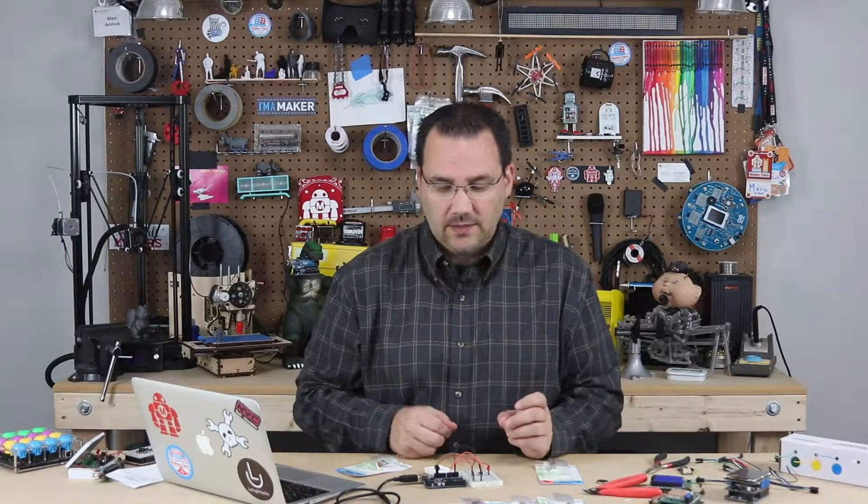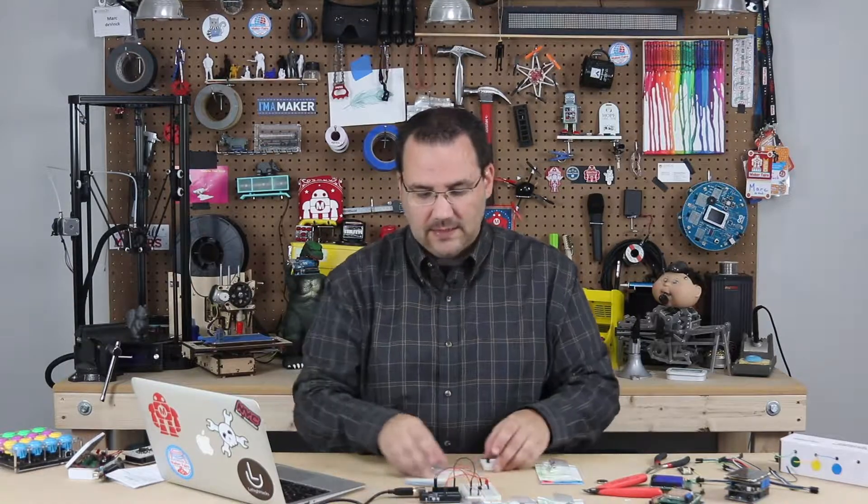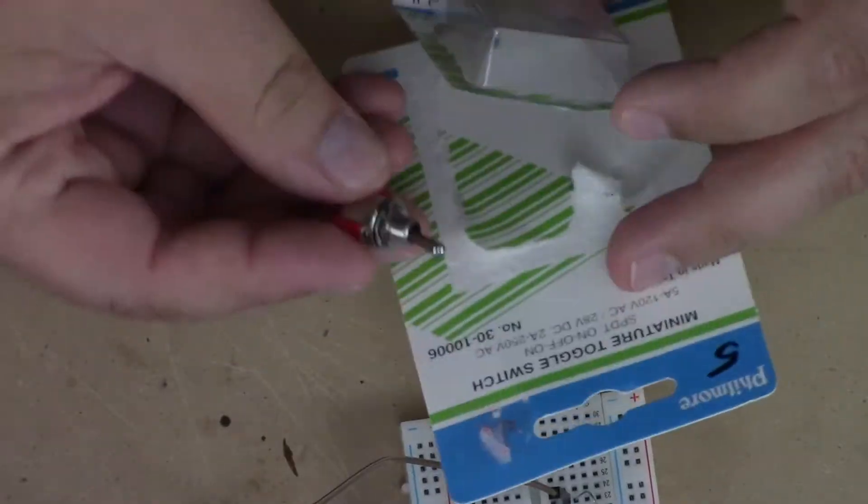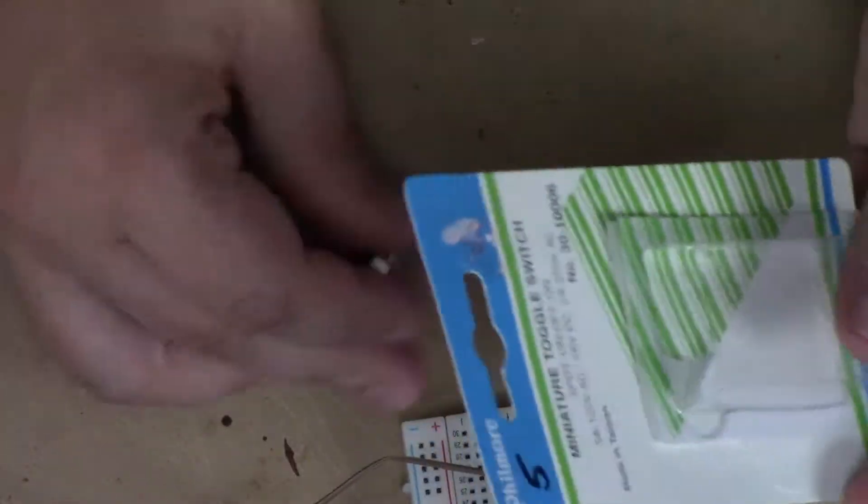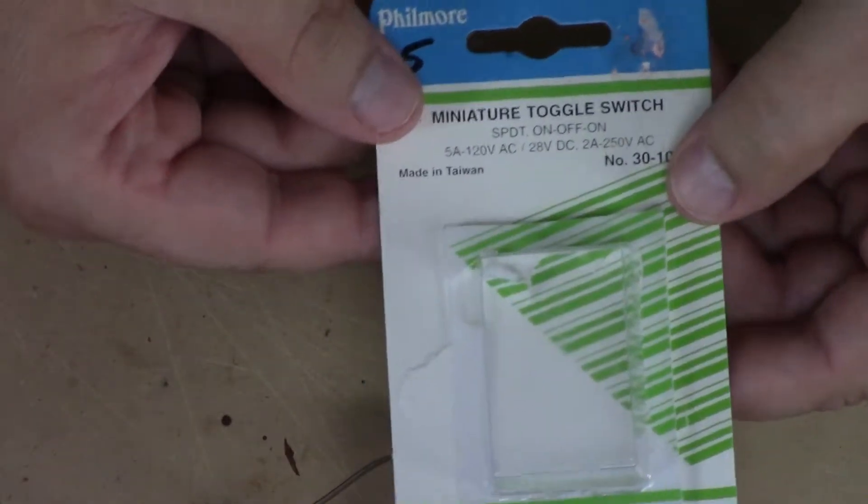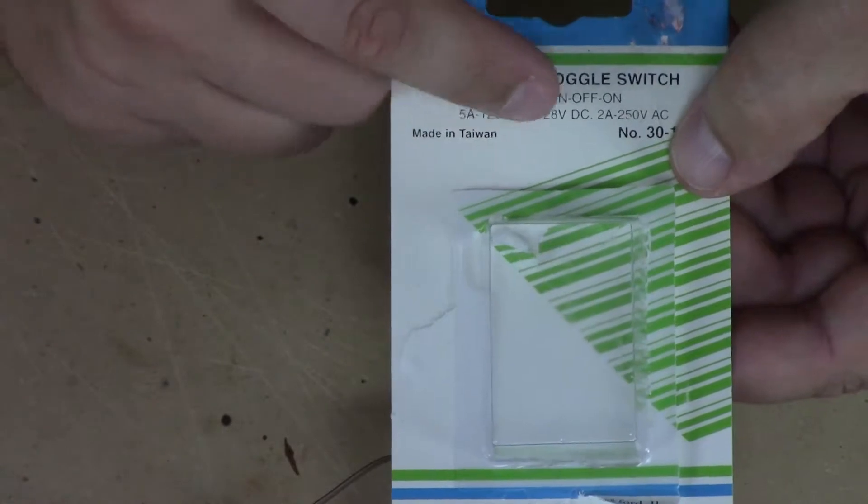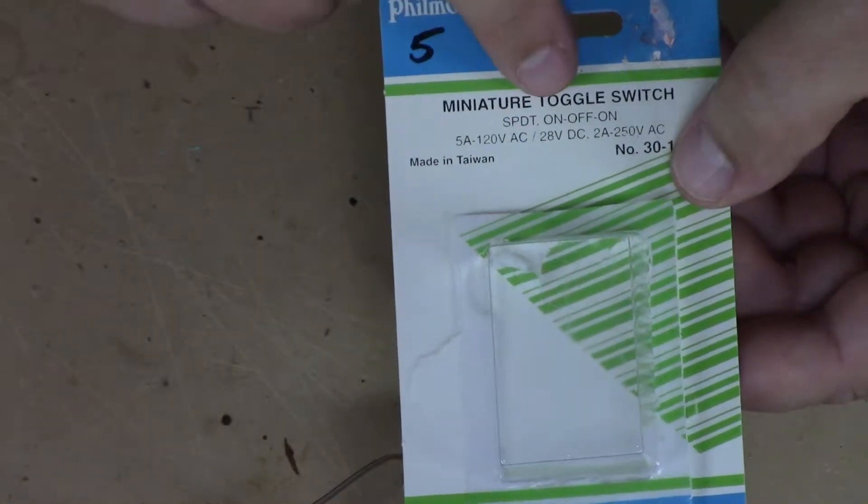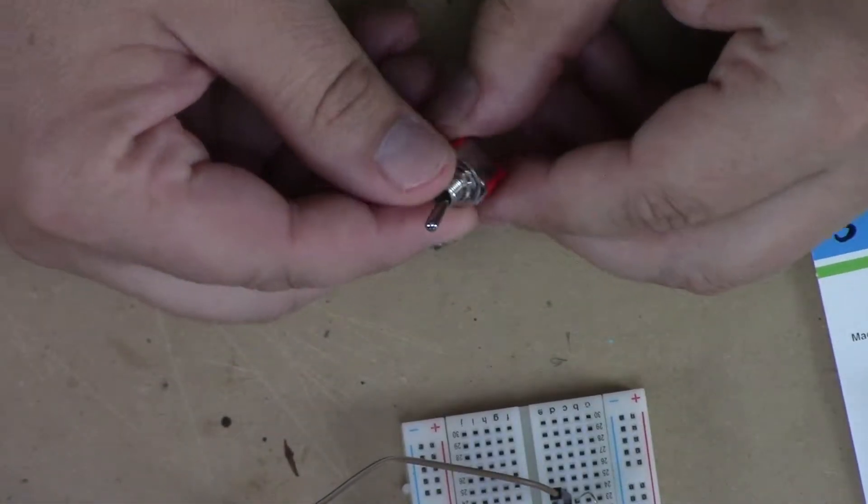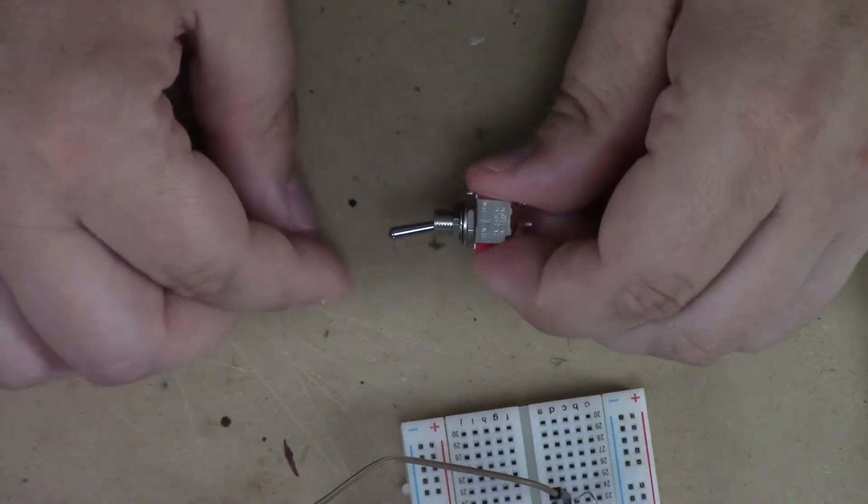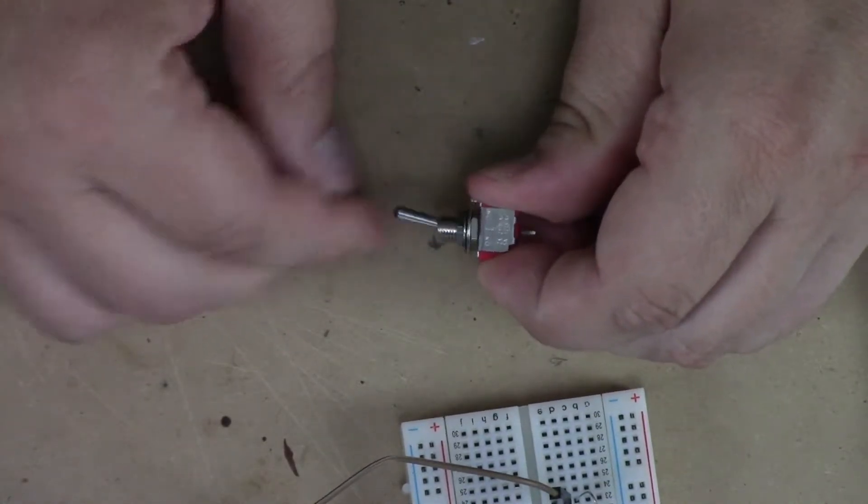Now there are a few little tips and tricks for working with switches, and I have a couple examples right here. This is a standard switch right here, and if you look at the packaging it says SPDT. What does that mean? It means single pole, dual throw, and then afterwards it says on, off, on. If you look at the switch you can see this would be the on, off, on.